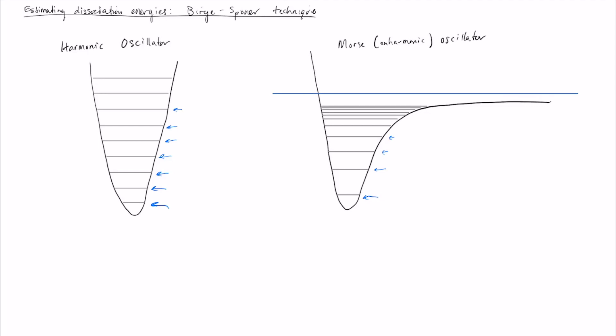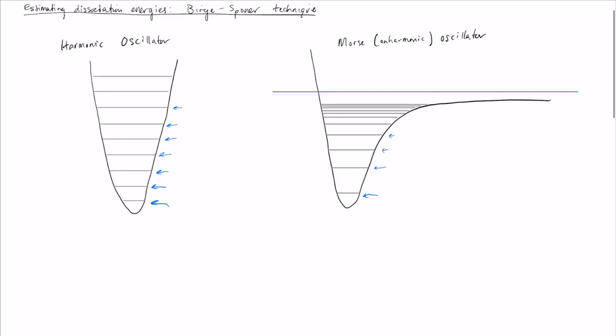What that means is that in the Morse oscillator case, you will have a maximum bound energy, or equivalently, you'll have a maximum quantum number that can be bound within the Morse oscillator. To be a little bit more concrete, for a harmonic oscillator, you have really no such n_max, or n_max equals infinity, where n_max is the maximum allowed quantum number for a bound particle.